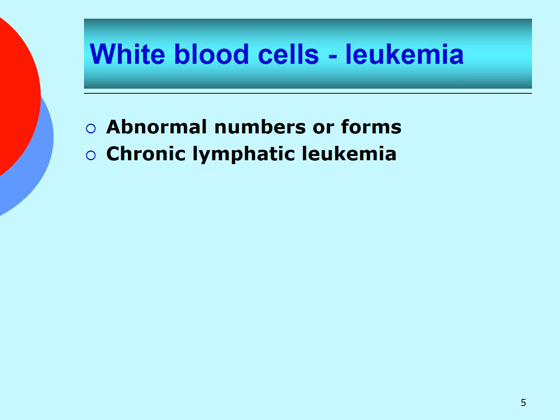There are a number of different types of leukemia, all of which involve abnormalities in white blood cell production by the bone marrow. In chronic lymphatic leukemia, there is an elevated number of atypical lymphocytes found within a sample.